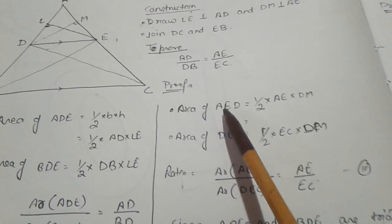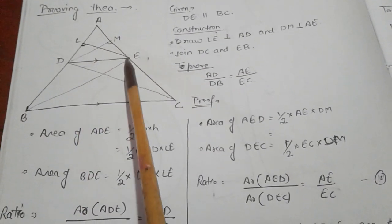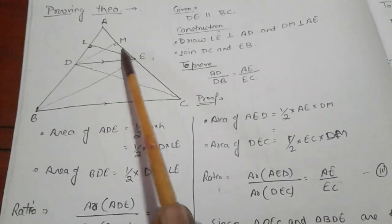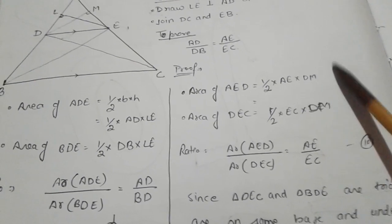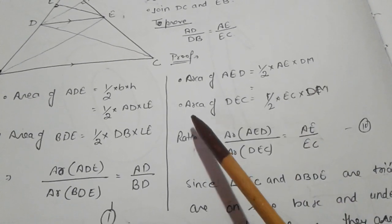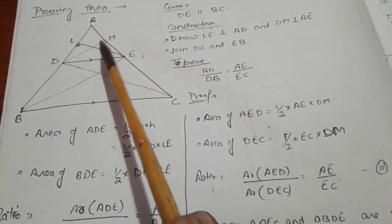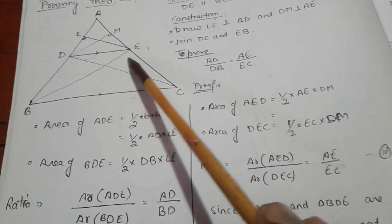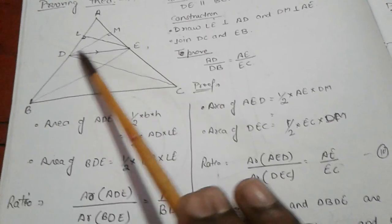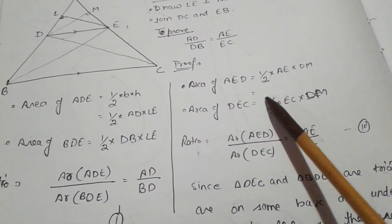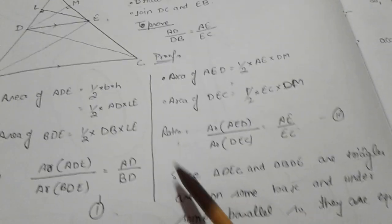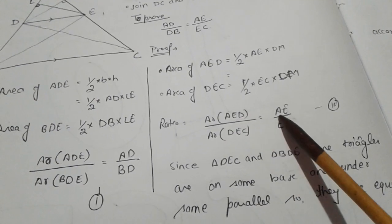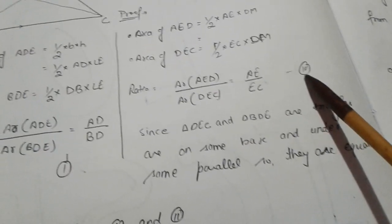Now for area of triangle AED: AE is the base and DM is the height, so it is half into AE into DM. Area of triangle DEC: this is also an obtuse angle triangle, so the altitude DM lies outside. We take half into EC into DM. The ratio gives us area of AED upon area of DEC equals AE upon EC. This is equation number two.